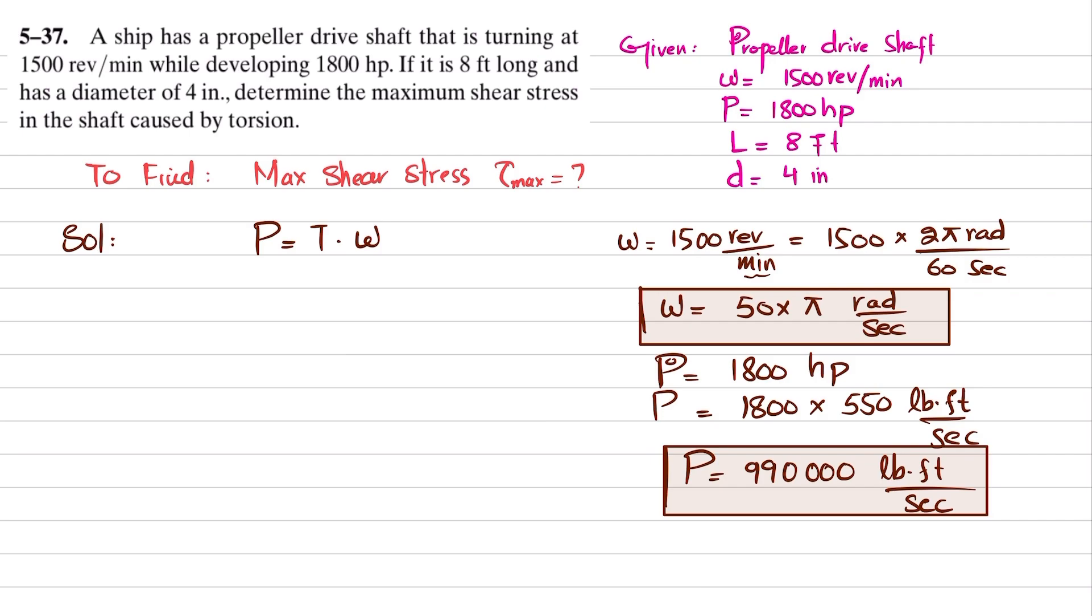Now we will find the torque. Torque equals power divided by omega, so 990,000 divided by 50π. The seconds cancel, and we are left with torque equal to 6302.54 pounds-feet.